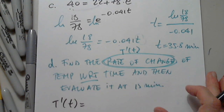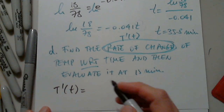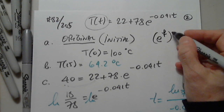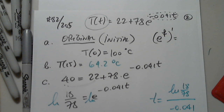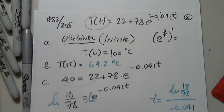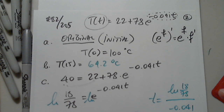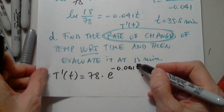T prime of T: when I differentiate 22, I get zero. Plus 78 multiplied by — how do I differentiate e to a function? E to a function prime equals e to the function times the inner function prime. So I copy e to negative 0.041t, times the inner function prime.